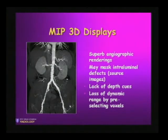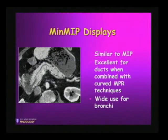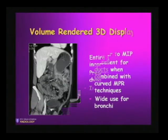There are now excellent bone segmentation algorithms available which can eliminate that, making MIP a lot more valuable. The mini-MIP display — instead of looking at the brightest pixel, you look at the darkest pixel. This is excellent for looking at the pancreatic duct, the common duct, pancreas divisum, and many chest radiologists are now using this in analysis of the bronchi in chest CT work.